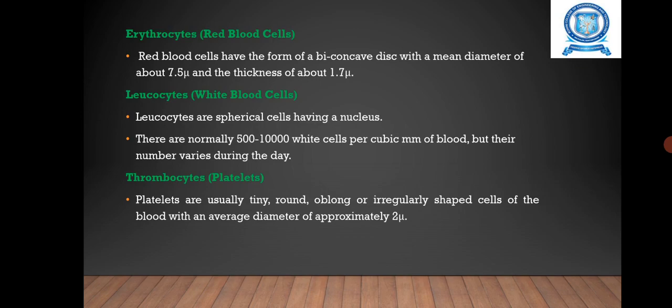Next is platelets. The platelets are usually tiny, round, oblong or irregularly shaped cells of the blood with an average diameter of approximately 2 micrometers.